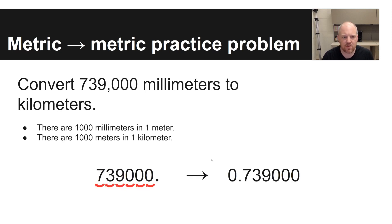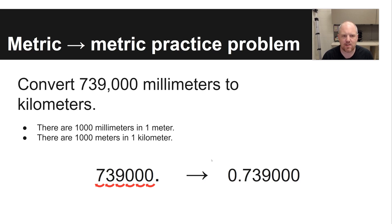Just another way to look at this: there are 1,000 millimeters in a meter and 1,000 meters in a kilometer. So all you do is move your decimal six places to the left to get your answer. That's the benefit of the metric system — very easy to convert units, with factors of 10 as conversion factors.